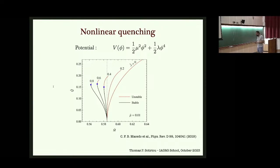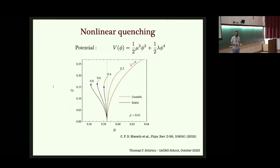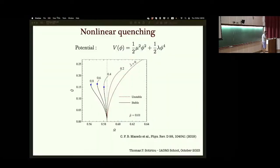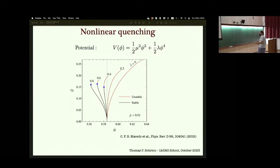The lesson to take home is that scalarization is really a nonlinear effect. It starts as a linear instability, which you can study to find thresholds, but it is the nonlinear interactions that determine the properties of the final configuration. In nature, you probably wouldn't see the tachyonic instability unfolding from a Schwarzschild black hole; you'd more likely have a star with some hair collapsing and growing hair in the process.